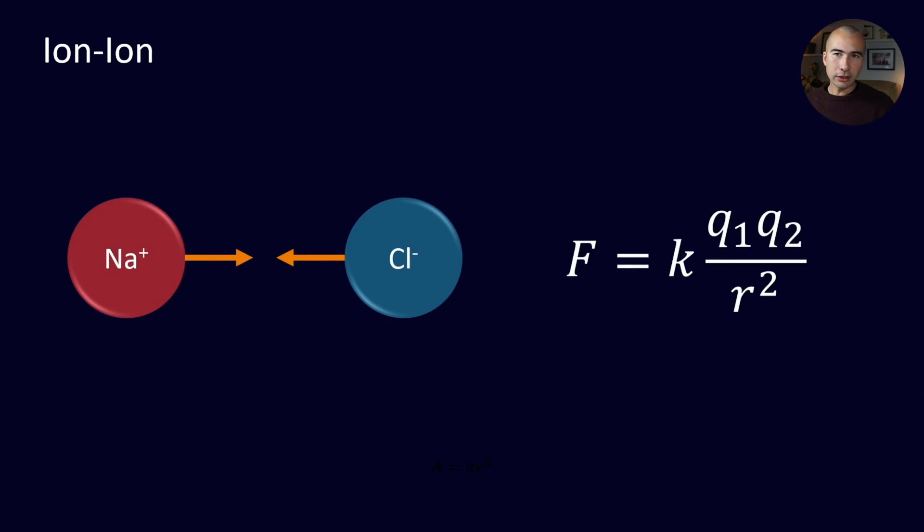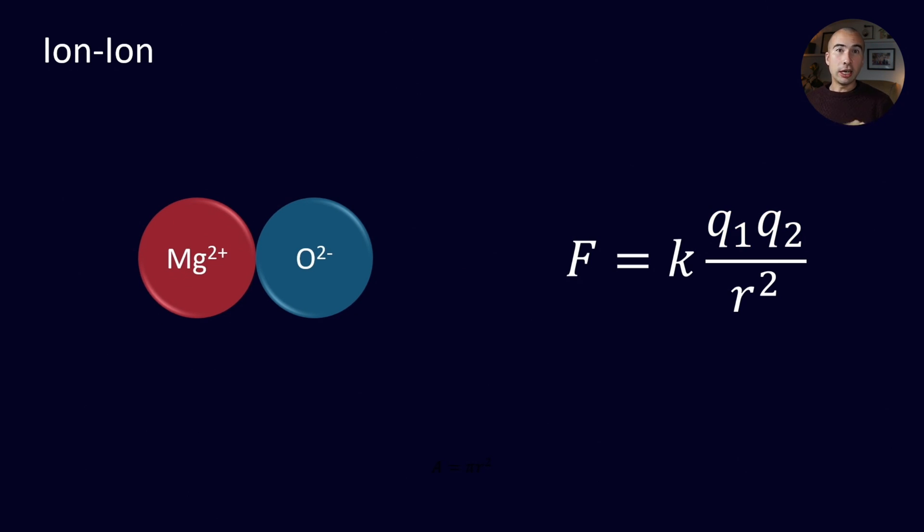We can express the strength of that attraction by this equation. There's a constant, and then you've got the charge one, charge two, over R squared. One of the things to note is the fact that it is proportional to the charges. Therefore, if we increase the amount of charge, for example I use magnesium oxide, because magnesium is two plus and oxygen is two minus, that's double the amount of charge on each side. So technically, on an electrical level, these attract each other four times more than sodium and chlorine do. The other complication is that size is also a factor. It's inversely proportional to the radius squared. And oxygen is a much smaller atom, and therefore it also is contributing to an increase in the attraction between the magnesium and the oxygen.